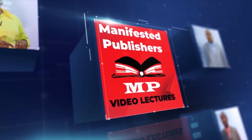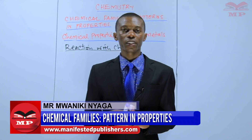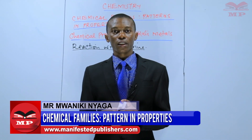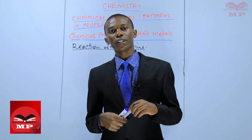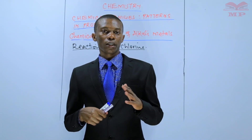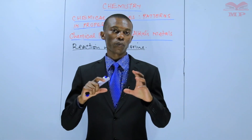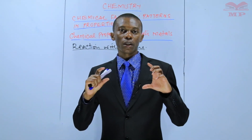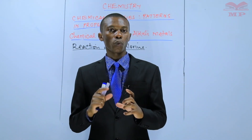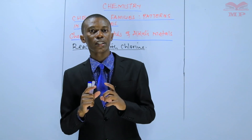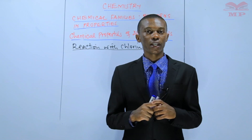Welcome to Manifested Publishers. Hello learners, welcome to Manifested online classes. We are learning Chemistry Form 2 and the topic is Chemical Families and Patterns in Properties. The subtopic is the reaction or chemical properties of alkali metals, where we are discussing the reaction of alkali metals with chlorine gas.